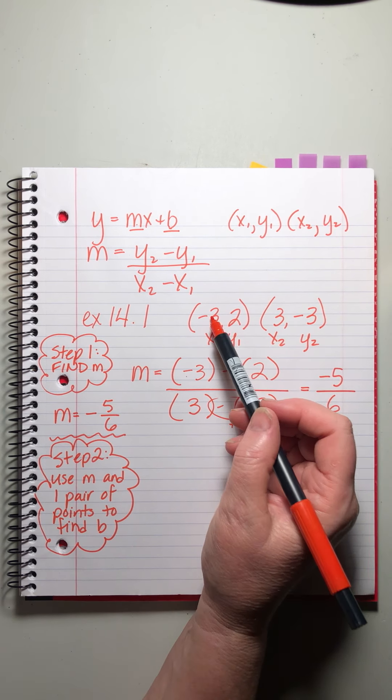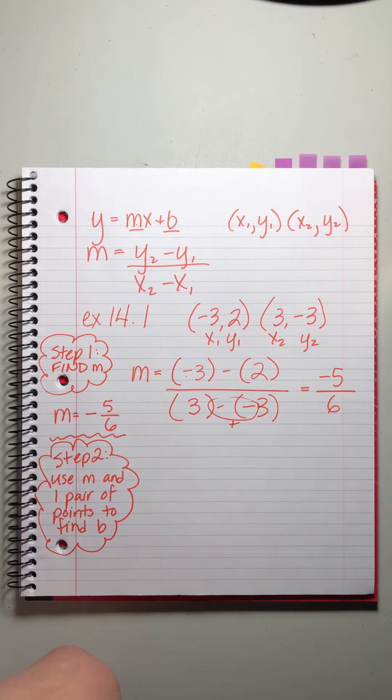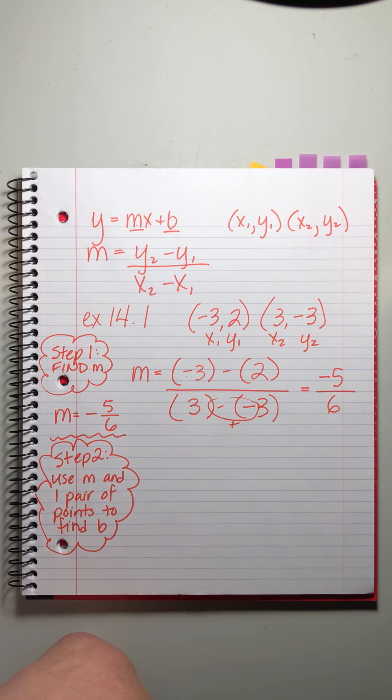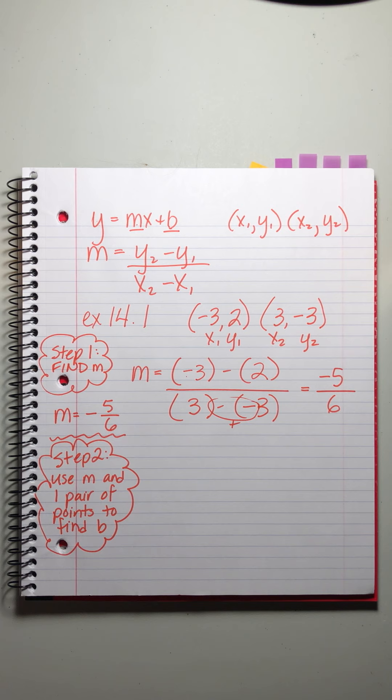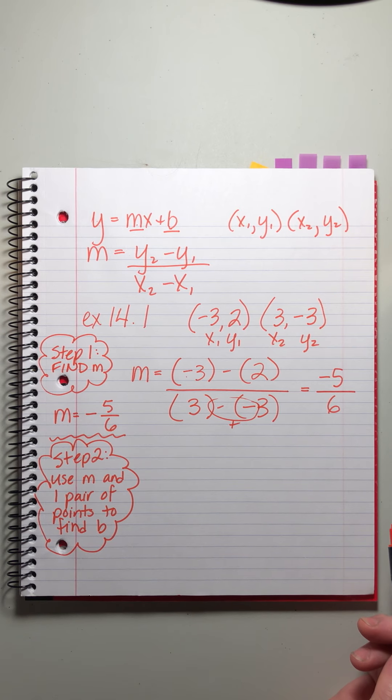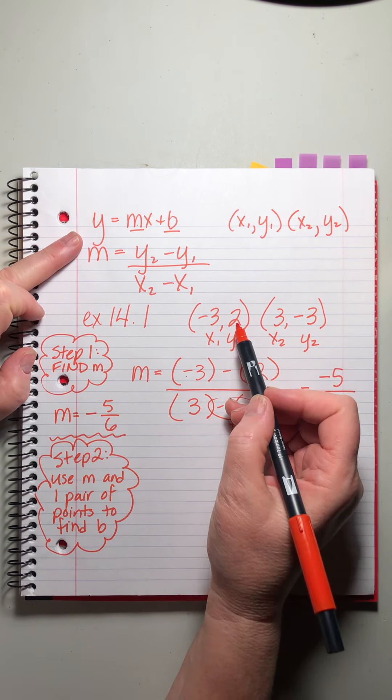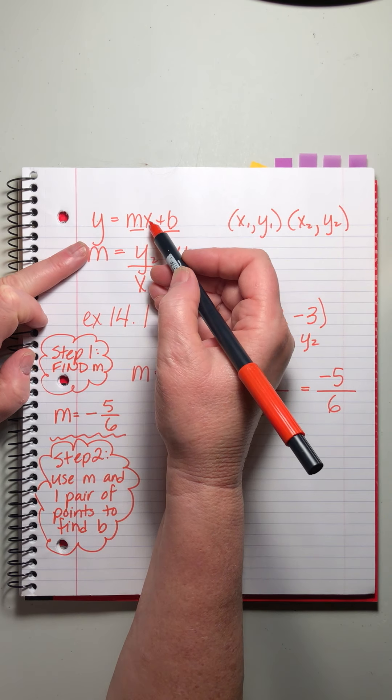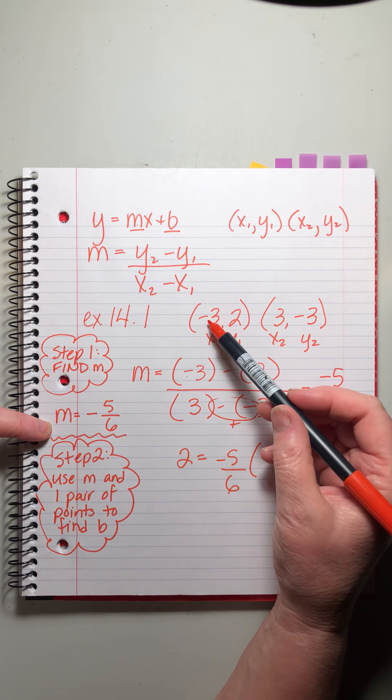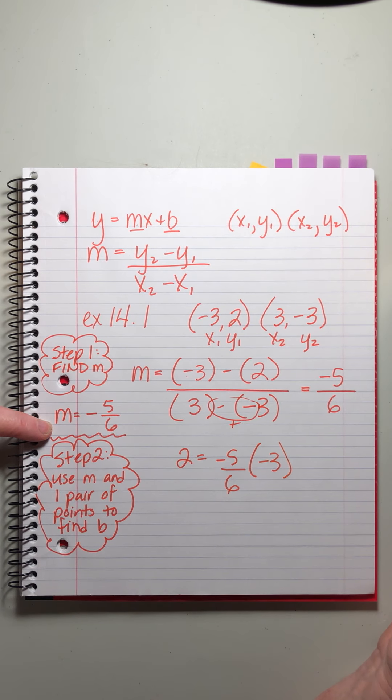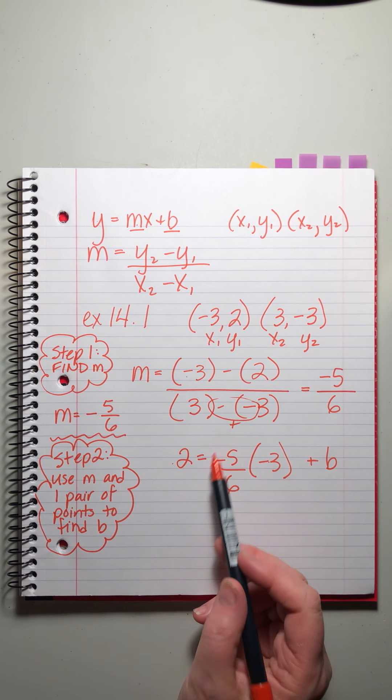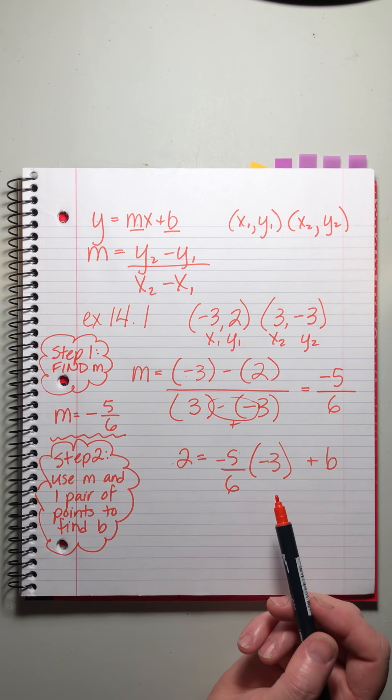Now here's the thing. How do you know which pair of points to choose to plug in for step two? It doesn't matter. It should work out either way. So you can choose whichever pair you think will be easier to work with. I'm just going to choose the first pair this time, but trust me, it'll work out either way. So you don't have to worry about it. Okay. So I'm going to set this up. Y equals m times x. Okay. M is minus five over six times x. I'm using the first pair. So that's minus three plus b. Okay. So we've plugged in one of the pairs of points and the slope, which we just calculated. Cool. Right?